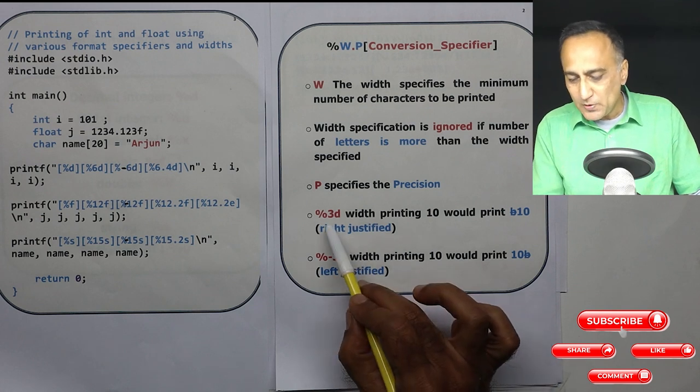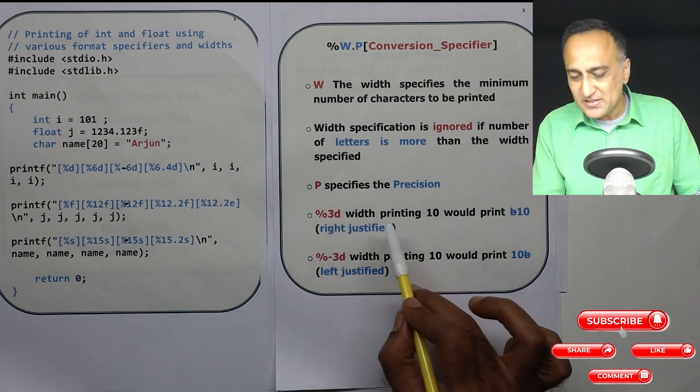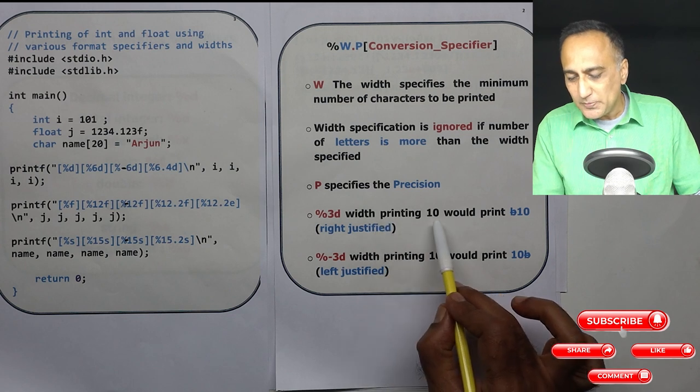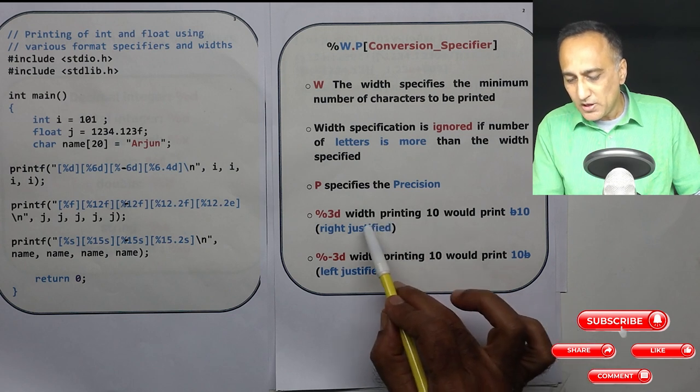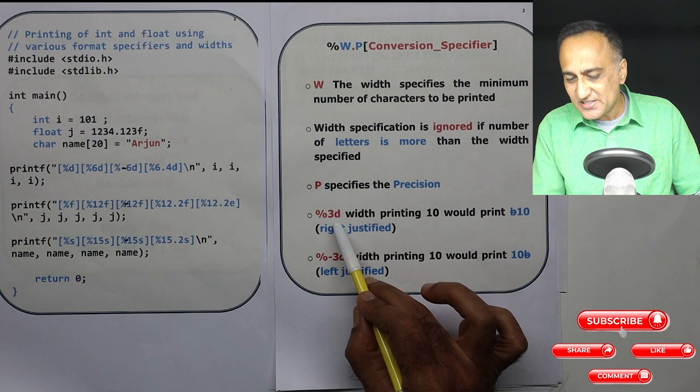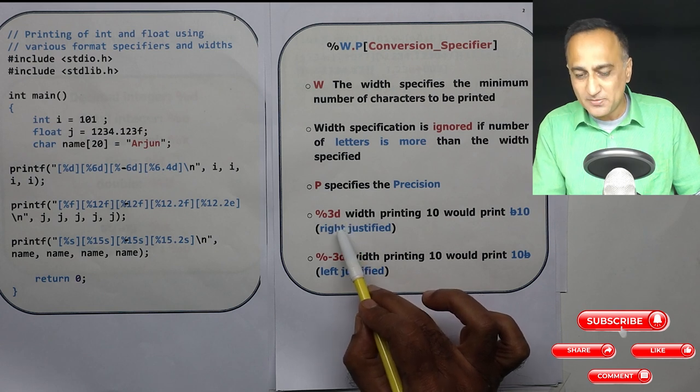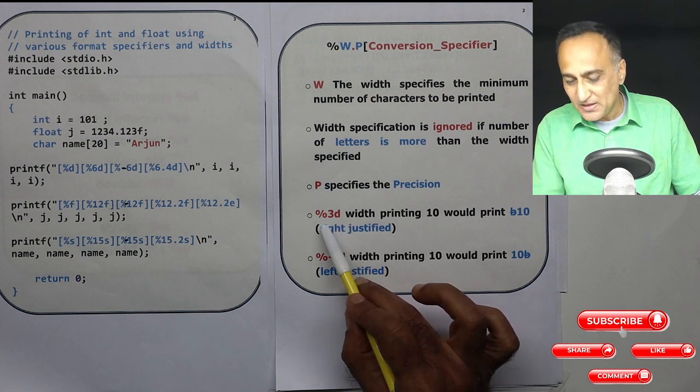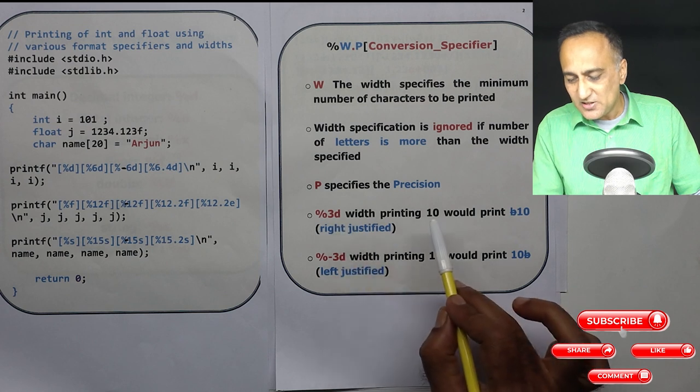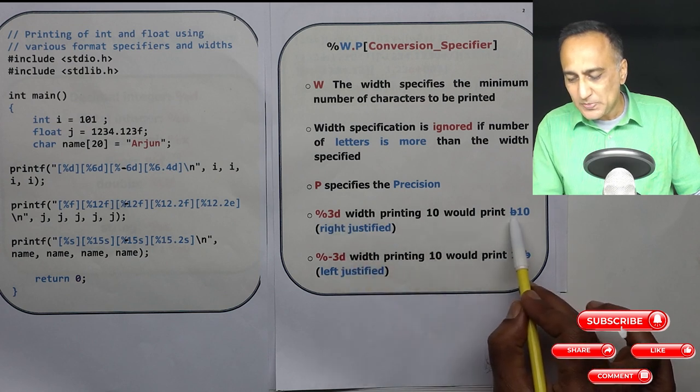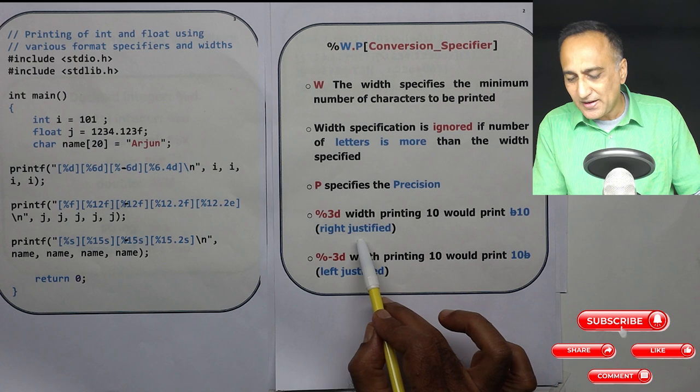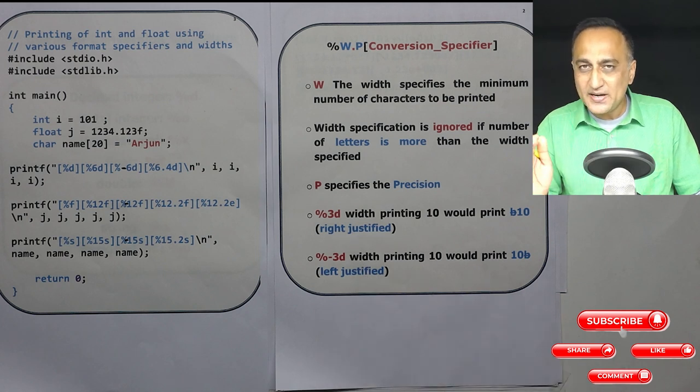Now suppose I want to print a decimal integer %3d with a width printing of 10. %3 indicates the width, there is no precision for decimal number or an integer number. %3d is going to print 10 with a space at the beginning and 10. It is going to be right justified in the sense that 1 and 0 are going to come at the end and blank is going to come before.